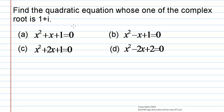Find the quadratic equation whose one of the complex roots is 1+i. The options are: (a) x²+x+1=0, (b) x²-x+1=0, (c) x²+2x+1=0, or (d) x²-2x+2=0.